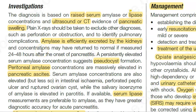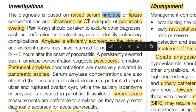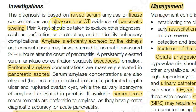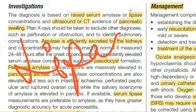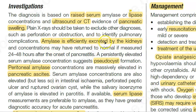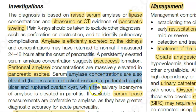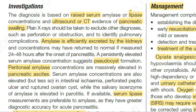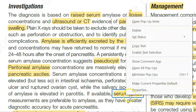For investigations, check serum lipase levels — lipase is more accurate than amylase. Amylase is excreted by the kidneys and is elevated in many other conditions, making it unreliable. Serum lipase measurements are preferable because they have better accuracy for diagnosing acute pancreatitis.